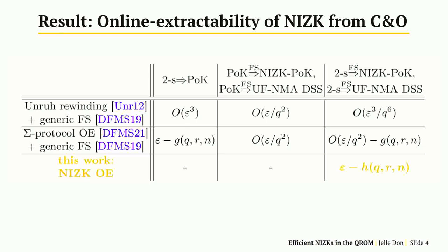Using our technique, we obtain a tight reduction — tight in the sense that if the attacker has success probability epsilon, our extractor also succeeds with probability epsilon, up to a negligible additive error term. In contrast, the generic reduction that applies to any sigma protocol has a loss of epsilon cubed over q to the sixth, which in previous work we reduced for this specific class of commit and open protocols to epsilon over q squared.